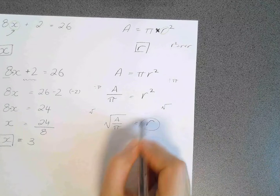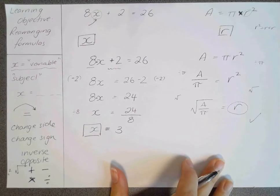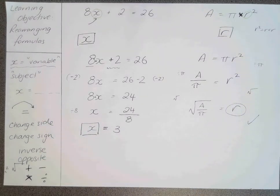And now we have r as the subject and that's all complete. So remembering the important part of rearranging our formulas is moving everything away from what we want the subject to be and remembering our inverse operation.